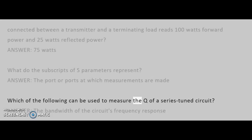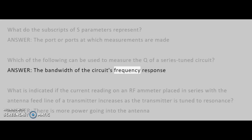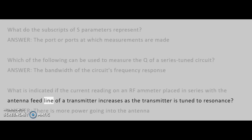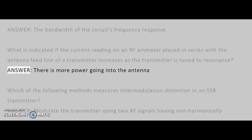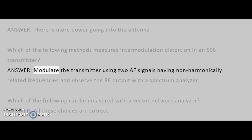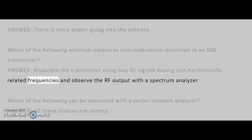Which of the following can be used to measure the Q of a series-tuned circuit? Answer: The bandwidth of the circuit's frequency response. What is indicated if the current reading on an RF ammeter placed in series with the antenna feed line of a transmitter increases as the transmitter is tuned to resonance? Answer: There is more power going into the antenna. Which of the following methods measures intermodulation distortion in an SSB transmitter? Answer: Modulate the transmitter using two AF signals having non-harmonically related frequencies and observe the RF output with a spectrum analyzer.